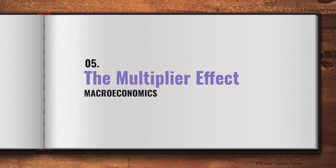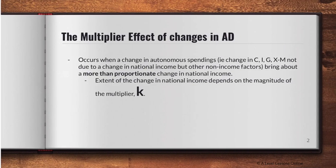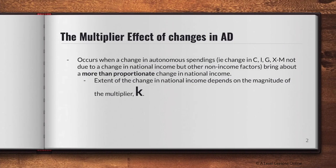You'll usually use the multiplier effect in conjunction with an increase in AD. I've already gone through a lot of material in the previous four parts — things like AD/AS and what happens when they shift and when they intersect. Go and look at that if you need a refresher before moving on to the multiplier effect in this video. The multiplier effect of changes in AD only applies to AD.